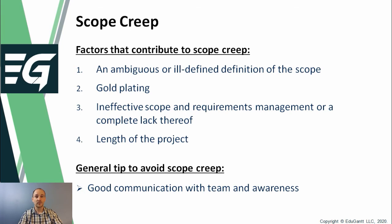The third factor is ineffective scope and requirements management, or a complete lack thereof. Scope and requirements management in this context simply refers to the monitoring and control of the project scope status, as well as managing changes to the scope baseline. This process integrates with overall project monitoring and control, as well as the execution of the project's integrated change control procedures.